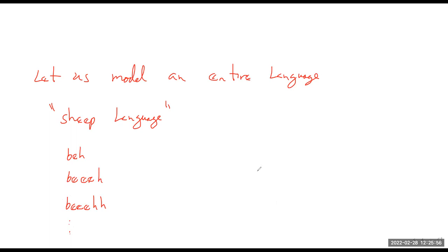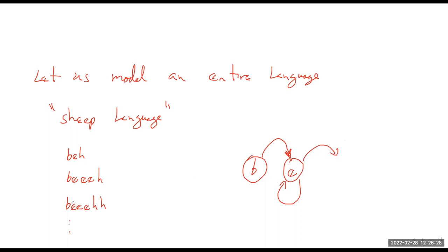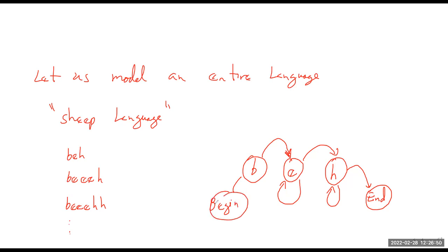How do we use an automaton to model this? It's got a beginning state — it starts with a B. Then from B, it goes to E. How many E's can you have? More than one — two, three, or more depending on how angry the sheep is. You model it with a self-loop on the E state, then go to the next state: H, which can also repeat. Then there's an ending state. With that little expression, we can model the entire language.